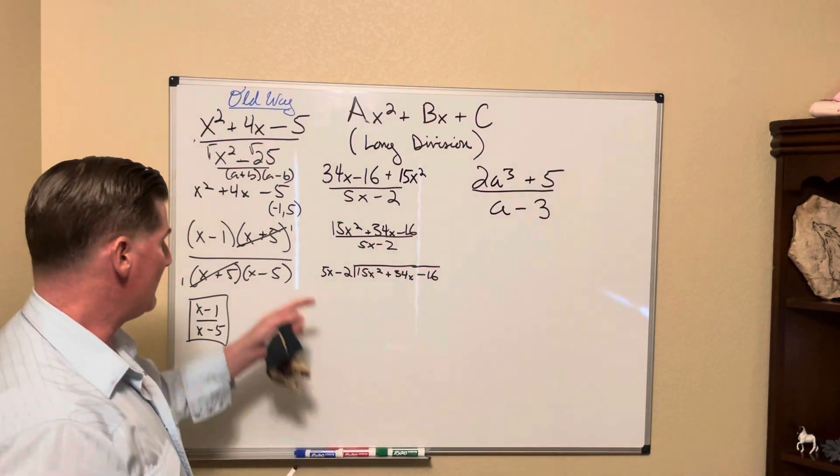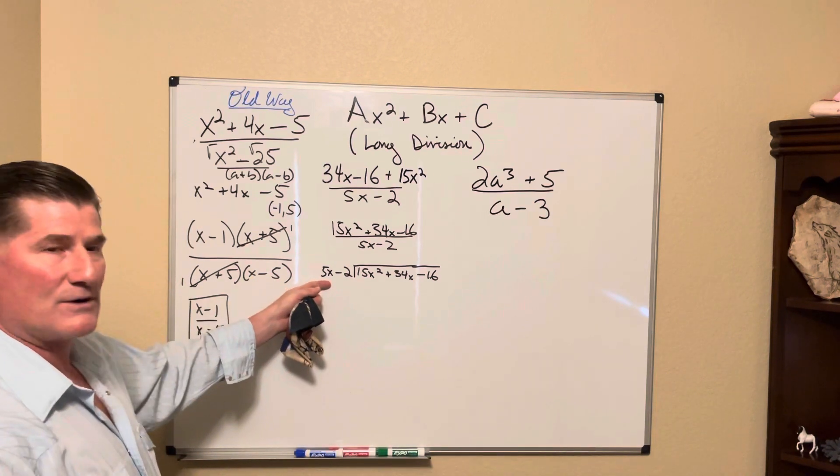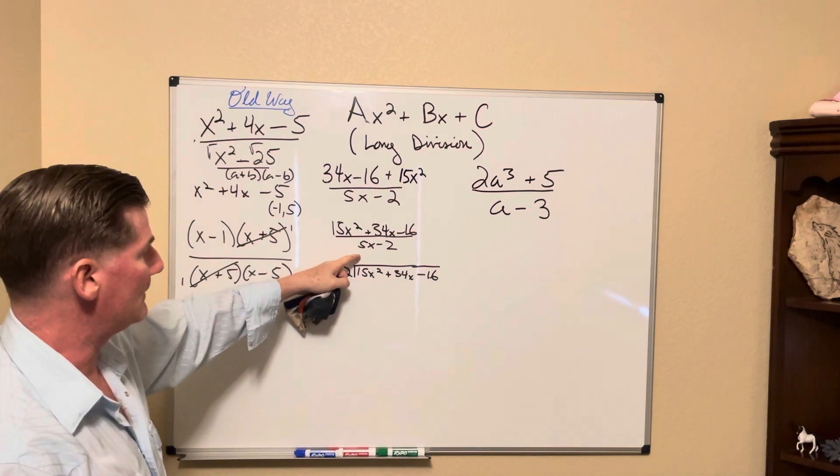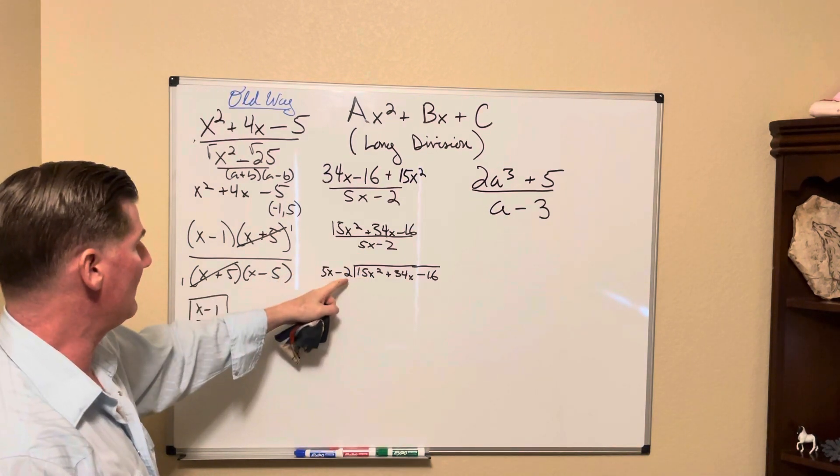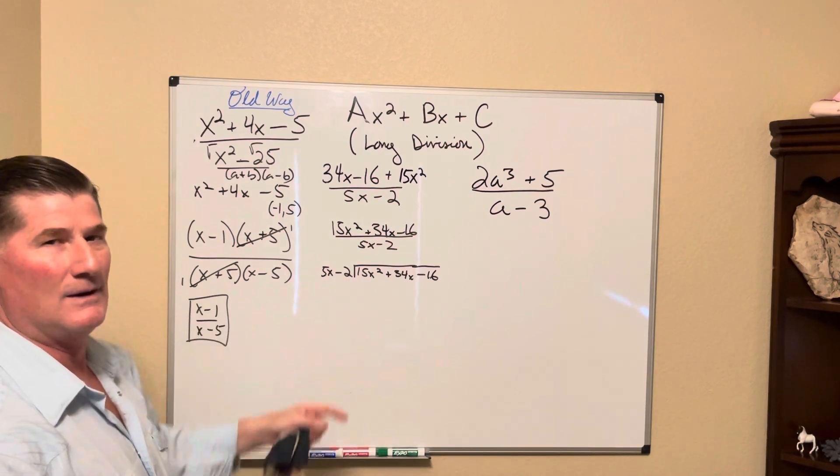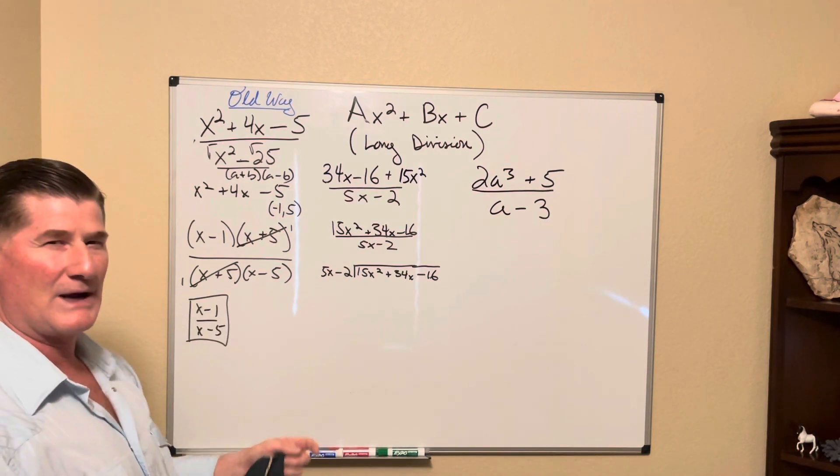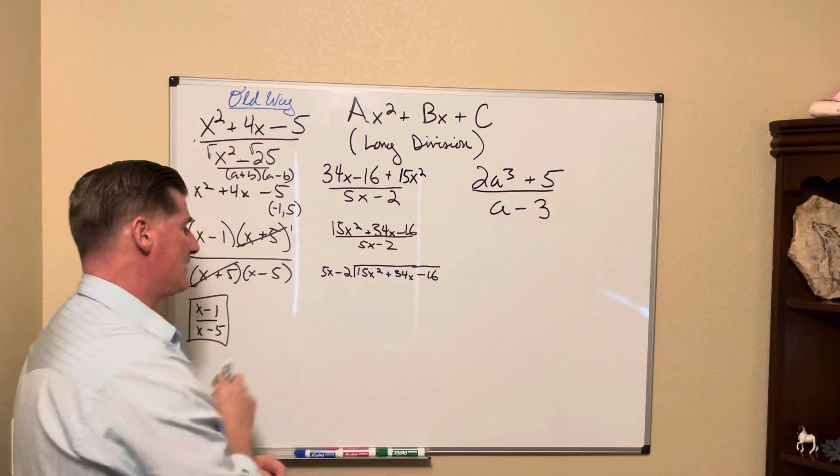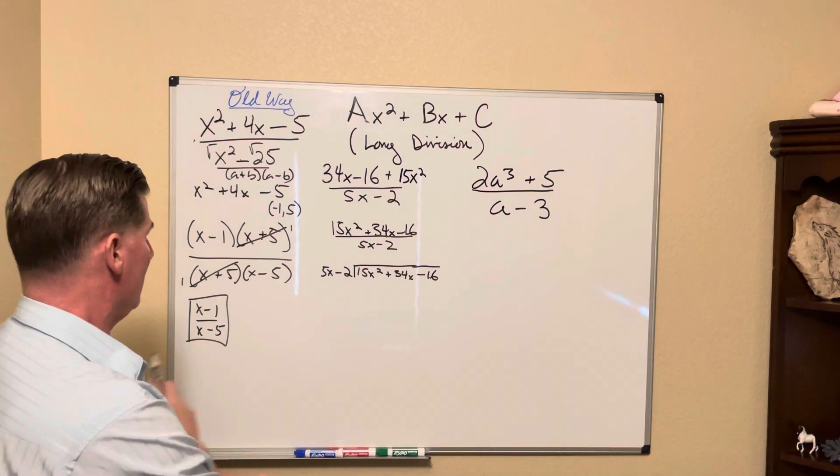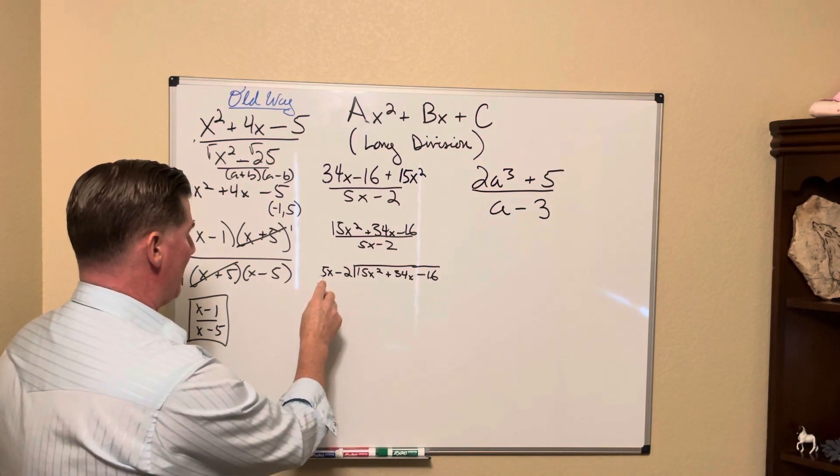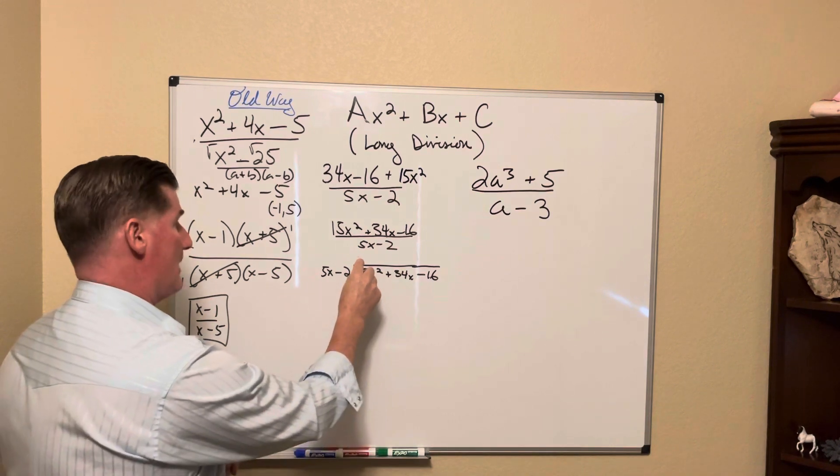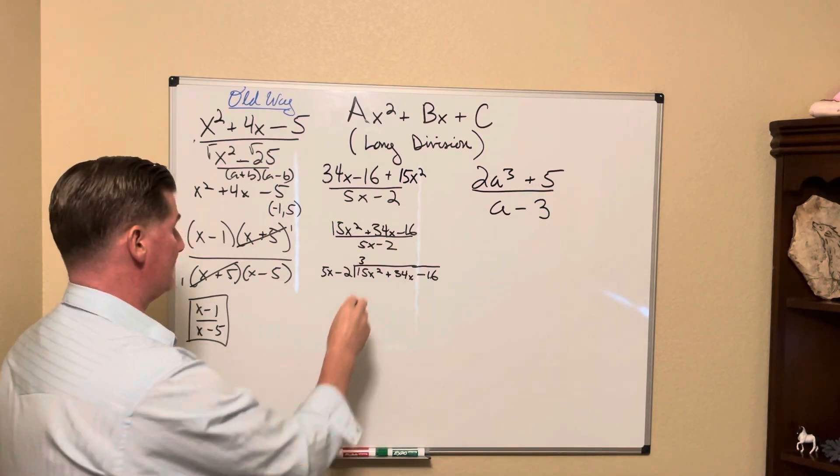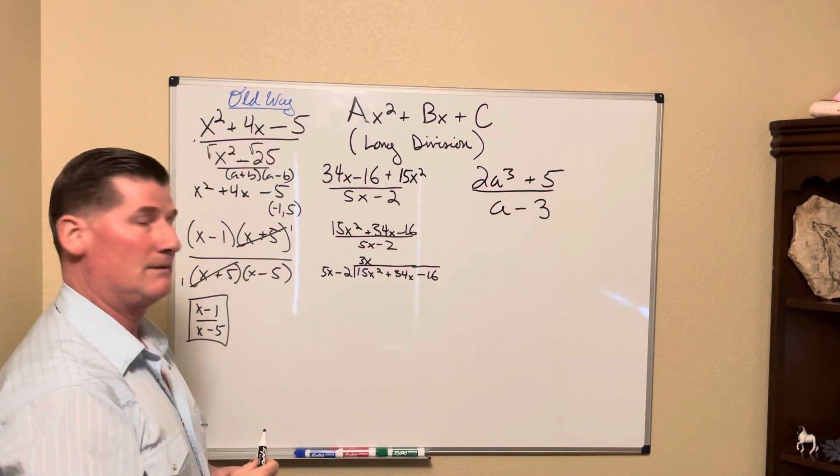The way we do this is we are really focused on that first term, making sure it matches this. That's where we're going to put as part of the quotient answer. Then later on, we're going to multiply that times the second term. We're going to do this multiple times, so you'll catch on. I've got 5x and I want it to match 15x squared. What do I have to multiply 5 times to get to 15? A 3, because 5 times 3 is 15. What do I have to multiply x by to get an x squared? Another x.